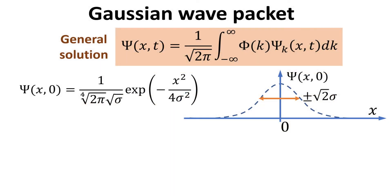Now, let's see how we can construct a general solution to the time-dependent Schrödinger equation with a given initial condition. Our initial condition is a Gaussian wave packet at t equals zero. The Gaussian wave packet is centered at x equals zero, and its localization width is described by the parameter sigma. The standard deviation is given by square root of 2 multiplied by sigma. The area within one standard deviation constitutes 68.2 percent of the area under the Gaussian distribution curve.